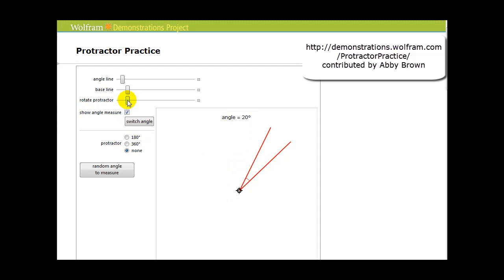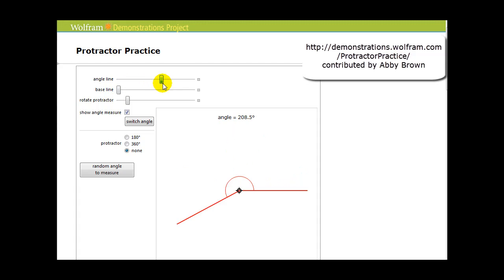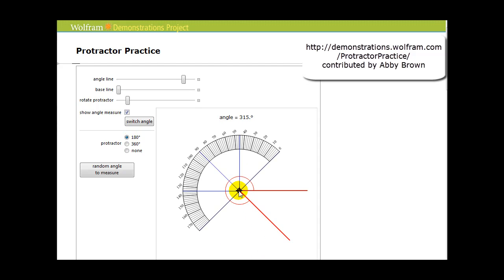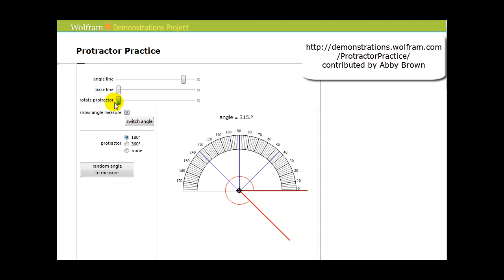Now let's try to measure an angle that is a reflex angle, or between 180 and 360 degrees. Let's say we want to measure this angle here. First, we line up the vertex of the angle with the vertex point. Then rotate our protractor so that the right side lines up with the initial side of the angle. And now this measures from zero to 180 degrees.